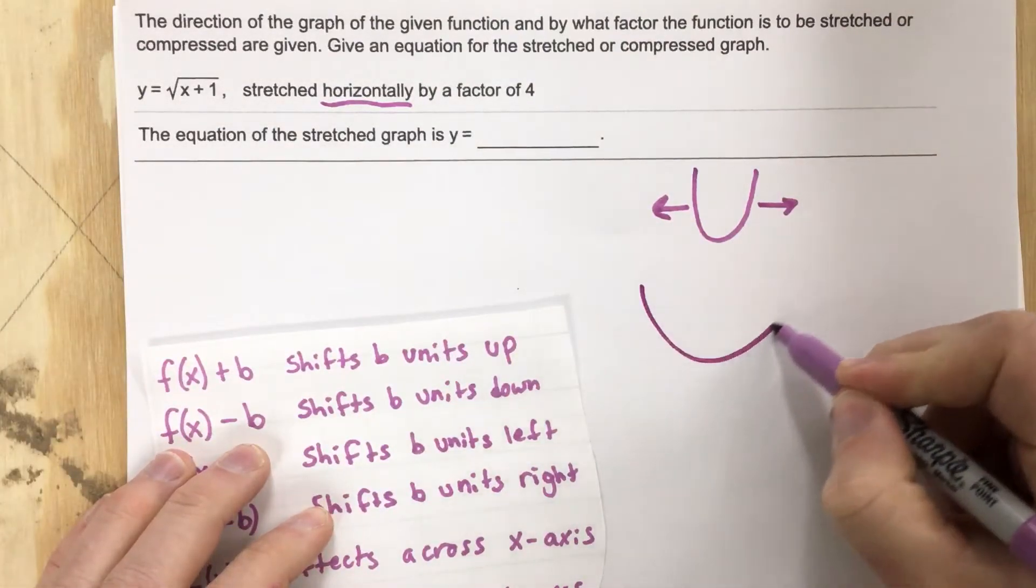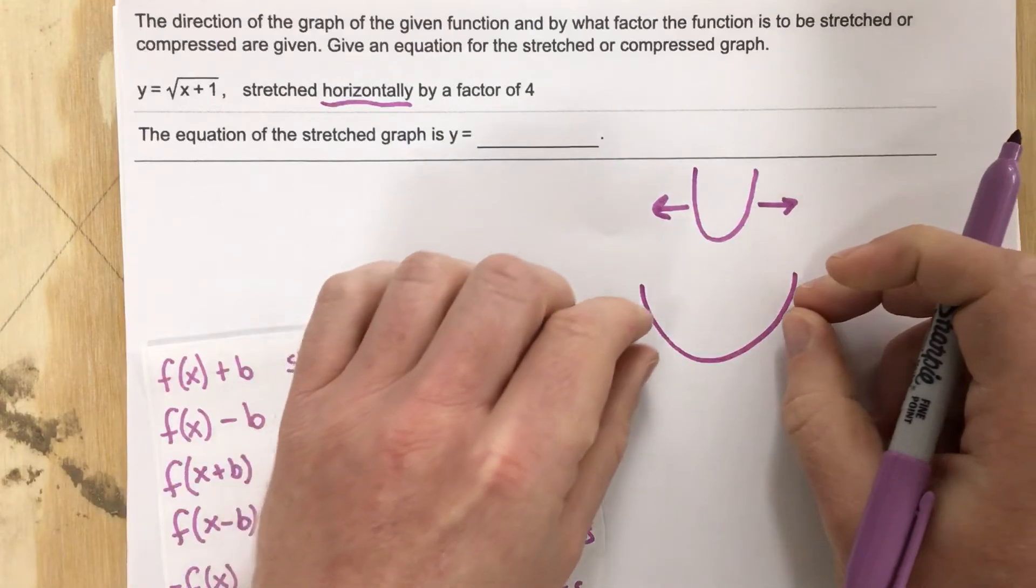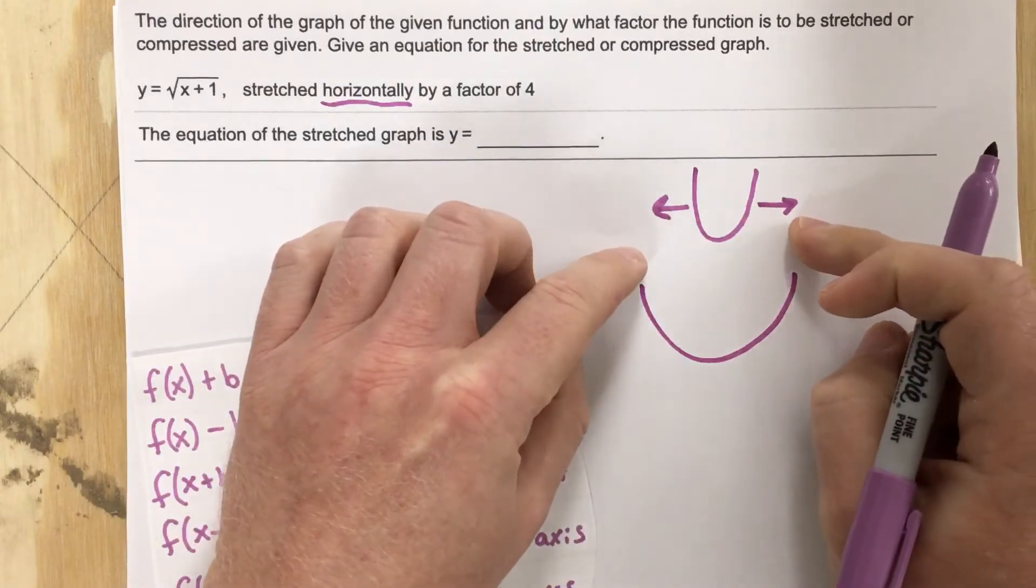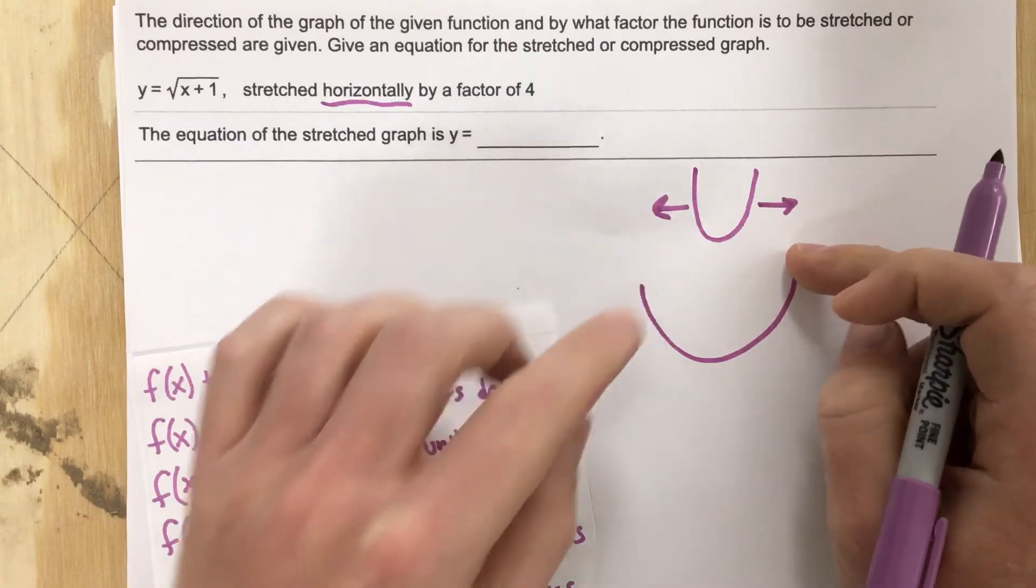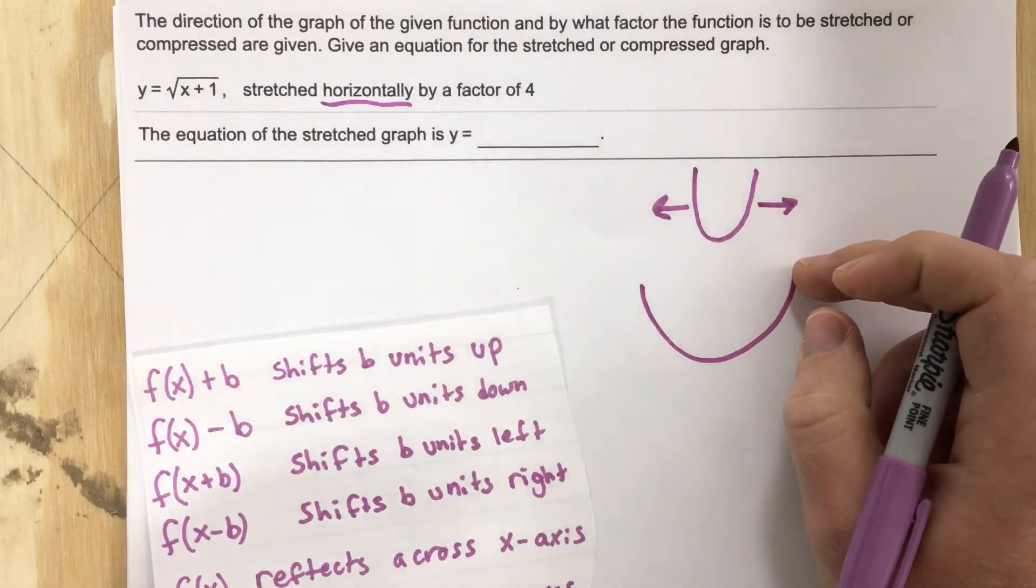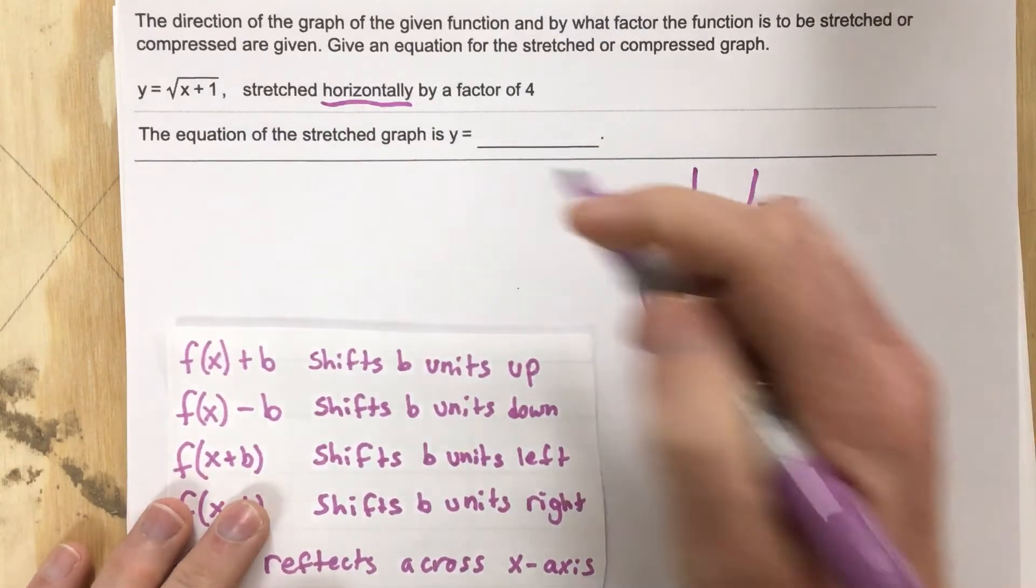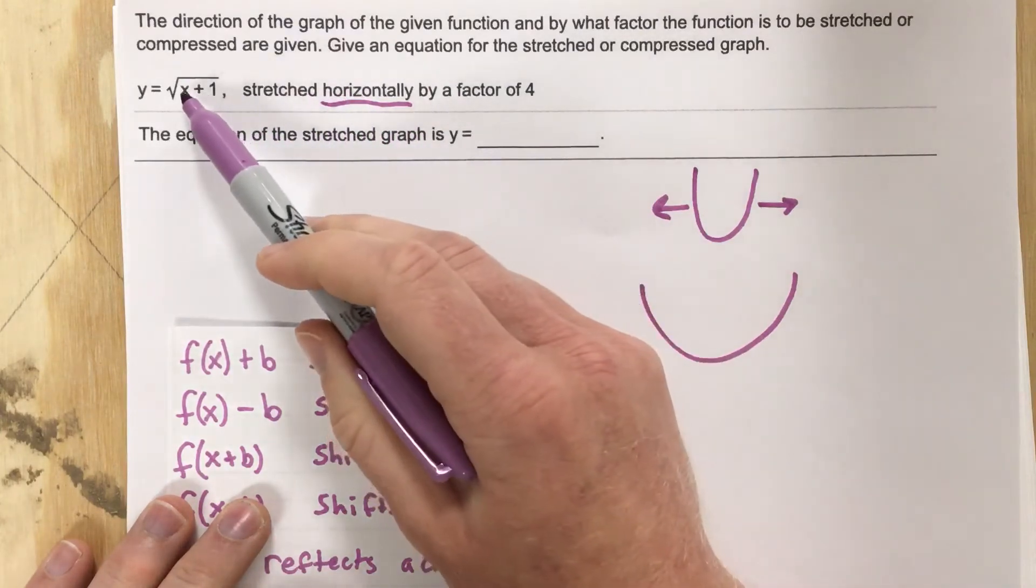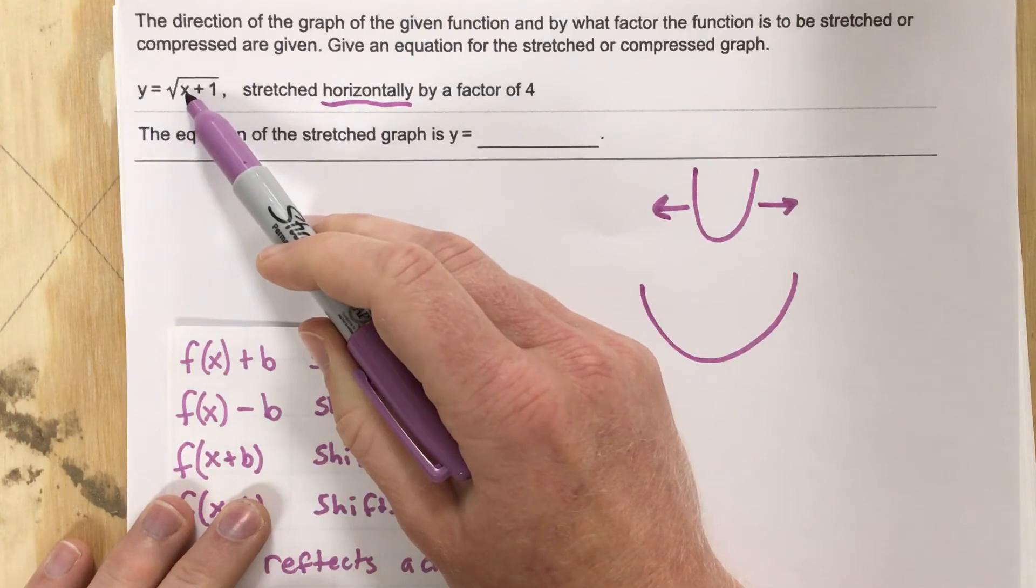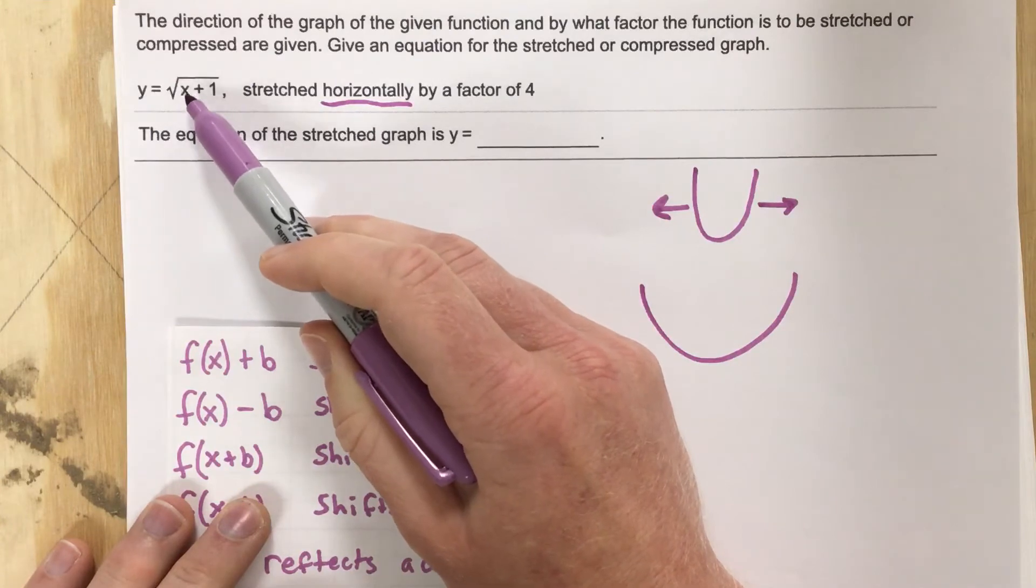It would look more like this. So when I'm stretching something horizontally, I'm affecting the y values by making them rise slower. So essentially, when I want to stretch something horizontally, I want to go to the x value, the independent variable, and I want to divide that variable by the number that I'm talking about.